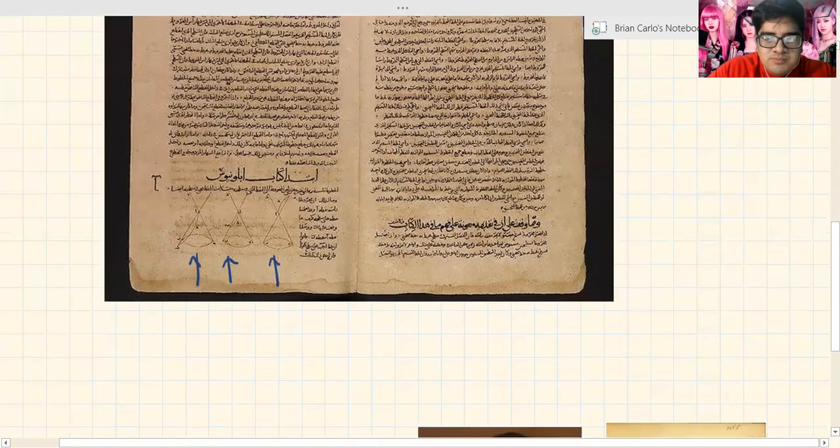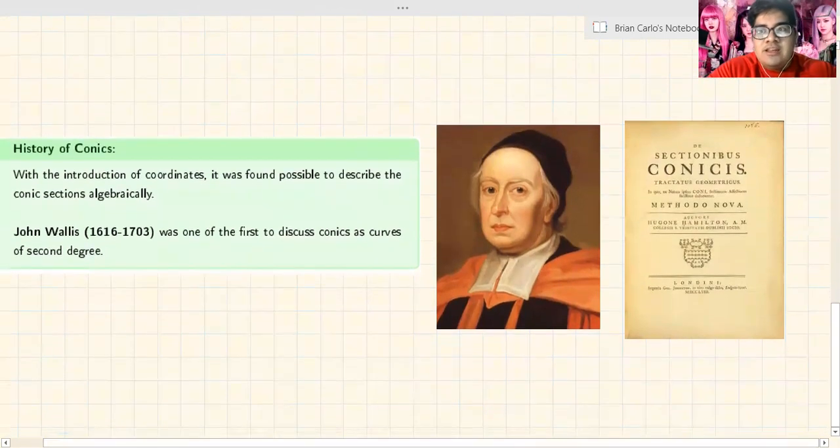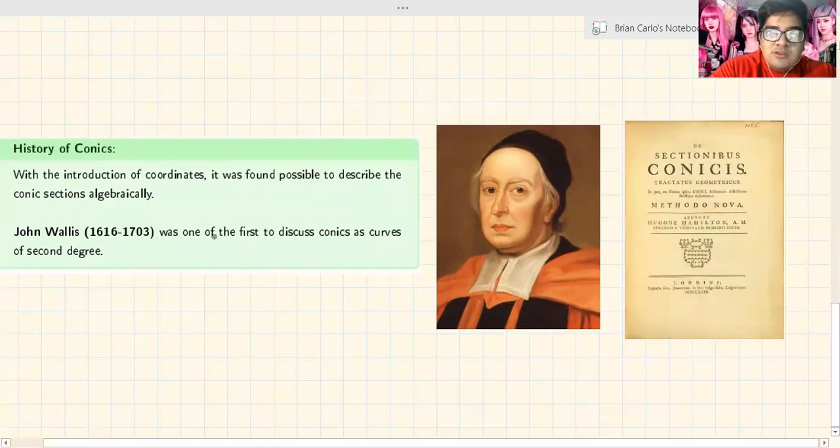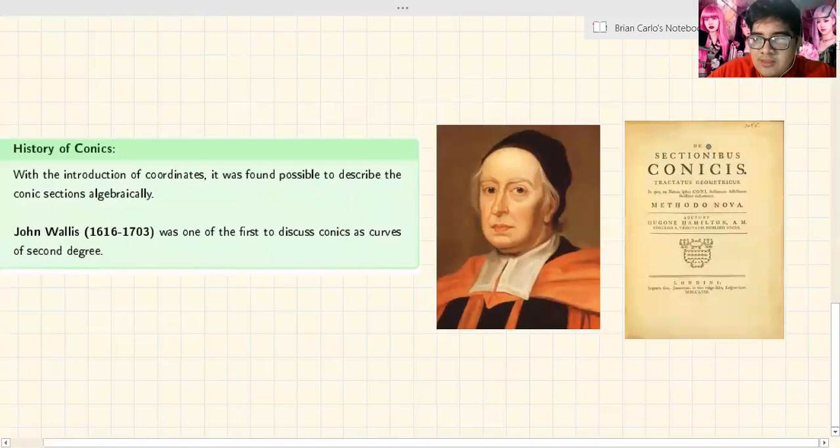But of course, it doesn't end there. There is a gentleman by the name of John Wallis. With the introduction of coordinates, it was found possible to describe the conic sections algebraically. You can assign equations to them. John Wallis formulated the formalities of these. John Wallis, from 1616 to 1703, was one of the first to discuss conics as curves of second degree. All the equations we'll discuss have an exponent of 2, hence second degree. He wrote a book entitled De Sectionibus Conesis where he compiled all his works on algebraic description of conic sections.